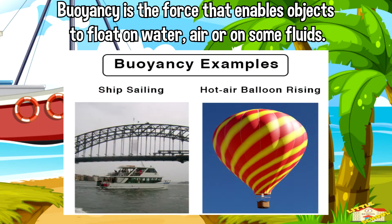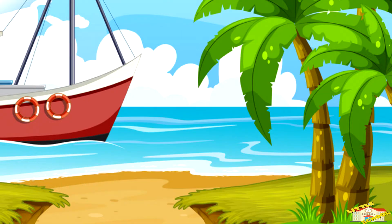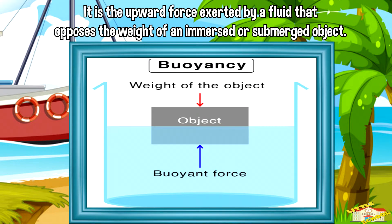Buoyancy is the force that enables objects to float on water, air, or on some fluids. It is the upward force exerted by a fluid that opposes the weight of an immersed or submerged object.